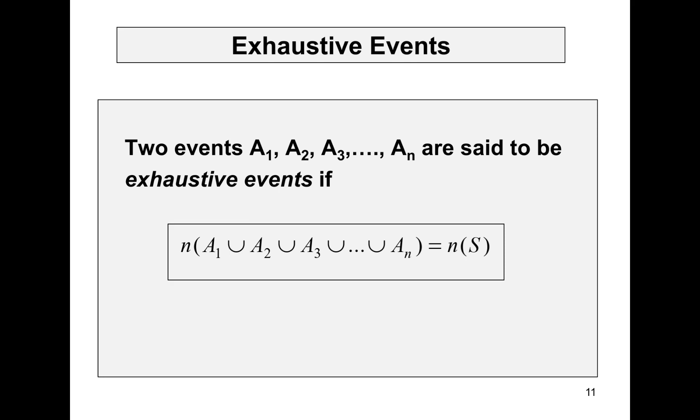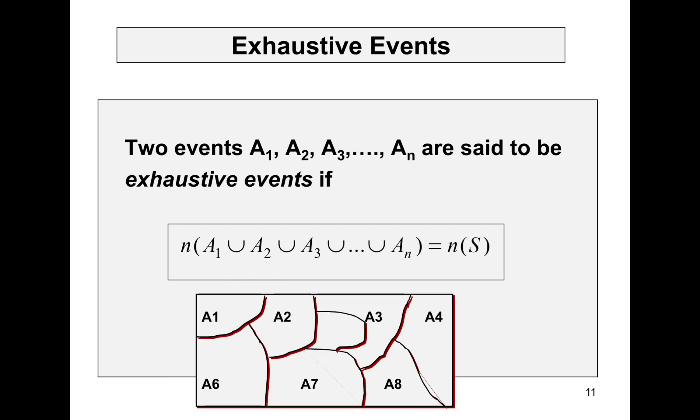Next one is exhaustive events. So, two events A1, A2, A3, up to AN are said to be exhaustive events if the number of A1 union A2 union A3 union so on, A up to AN is equal to the number of sample space. So, visually, we can also represent this like this diagram.